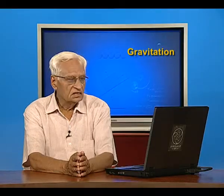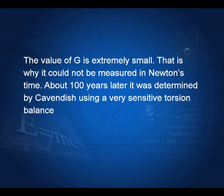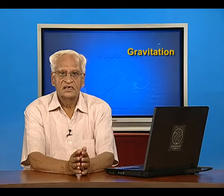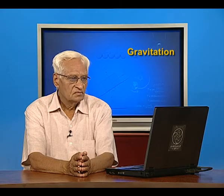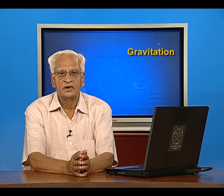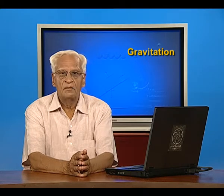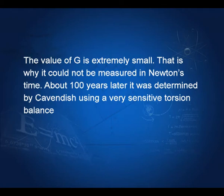As you can see, the value of G is extremely small, which means that the force of gravitation is quite weak. Since the value of G is very small, it could not be determined in the time of Newton. About 100 years later, it was determined by Cavendish using a very sensitive instrument called the torsion balance.